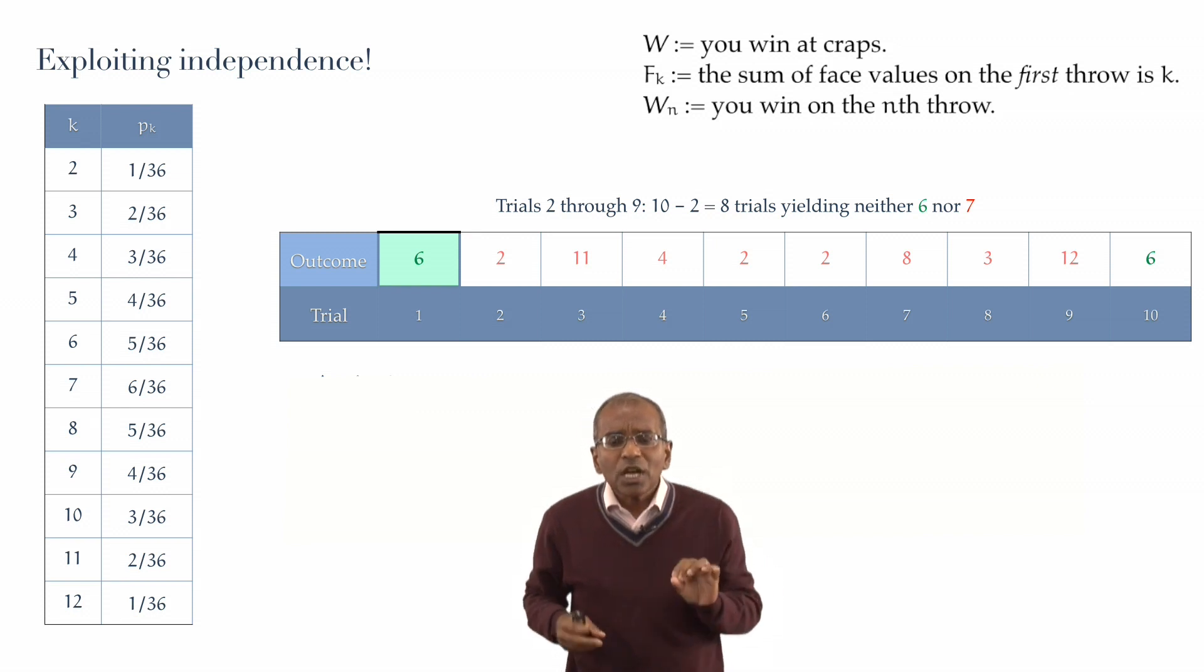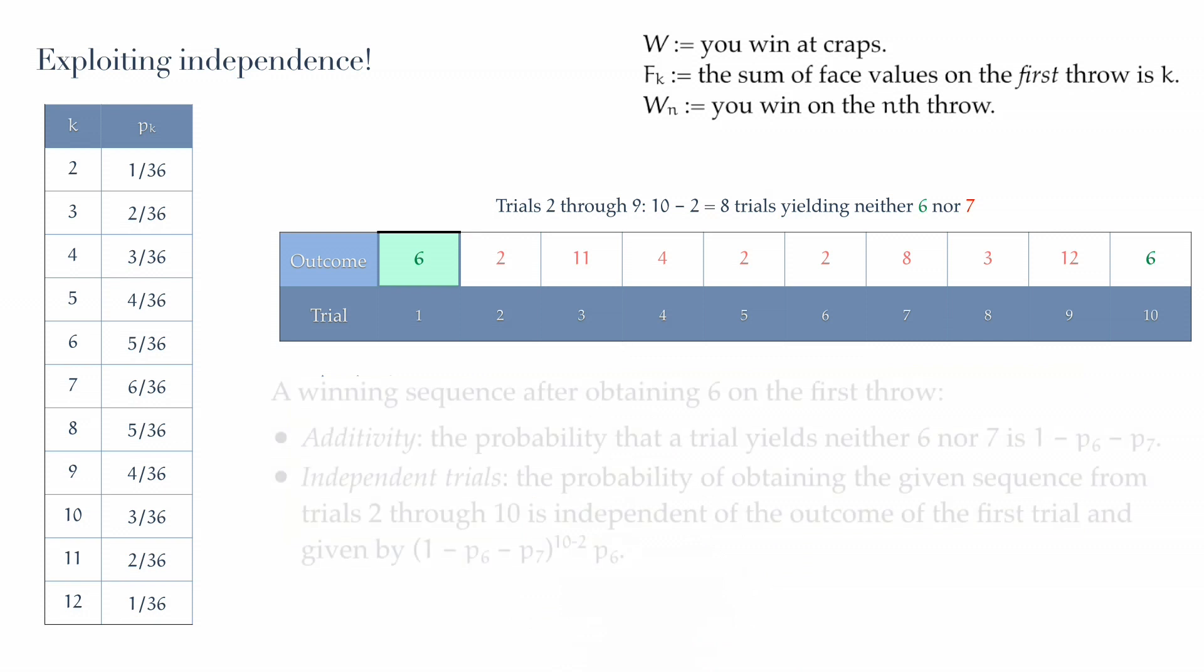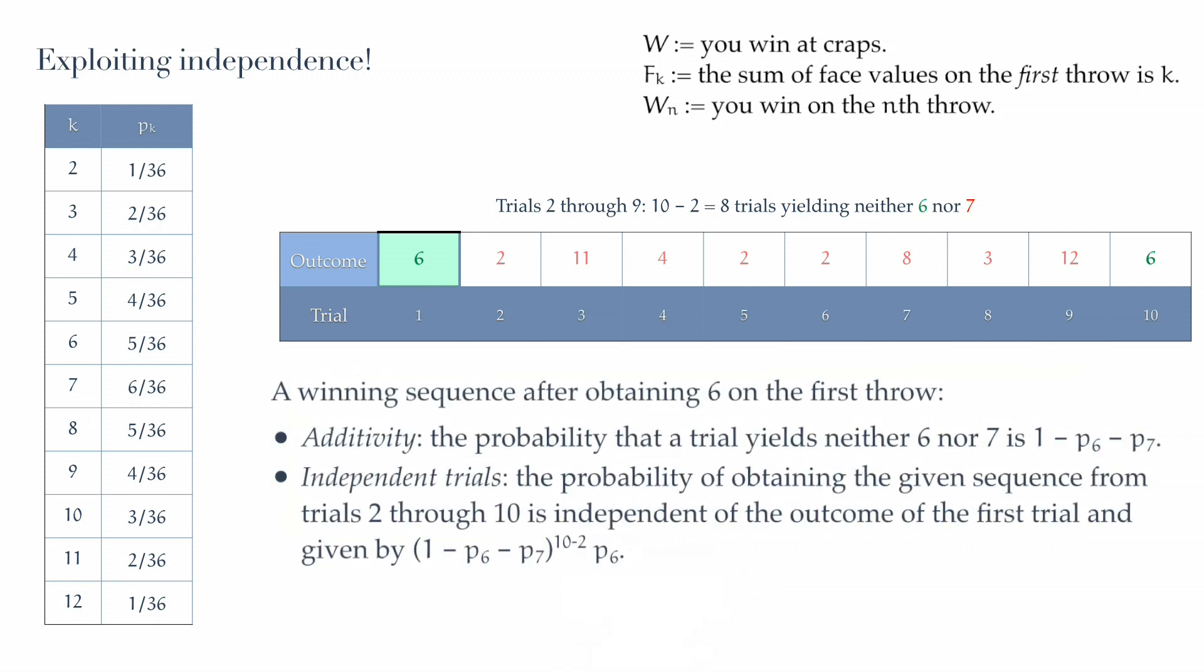What is the probability or the chance of such an outcome for this conjoint experiment? Let's take a look at this. The key idea here is 1, additivity, and 2, independence. Let's take a look at another sequence. For any of the intervening trials from 2 through 9, we can get any result whatsoever except 6 or 7. By additivity, the probability of obtaining any of those stated numbers shown there is 1 minus the sum of P6 and P7.